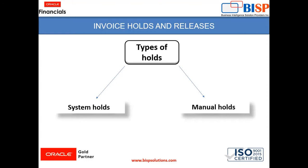System holds are created automatically. For example, when we create an invoice, we need to give an invoice amount, and under lines we also give an amount. In the distributions we give an amount too. The amount in these three steps should be equal. If there are any variances, the system will automatically create a hold, and until you correct it, the system hold will apply. When corrected, the system automatically releases the hold. Another example of a system hold is insufficient funds — if you have insufficient funds, the system also places a hold on that invoice.